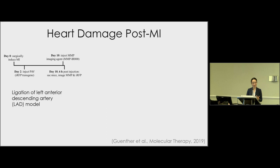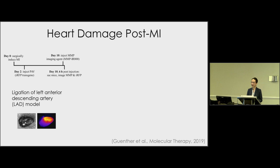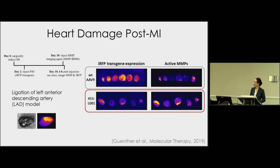For one model we're targeting heart failure after a heart attack. We do surgical induction of MI, then two days later a single intravenous injection of pro-vectors, and several days later we assess where expression is happening. A collaborator provides an imaging agent that lights up active MMP regions of the damaged heart. The unmodified AAV9 capsid delivers the IRFP transgene throughout the entire heart, not caring where active MMP areas are. But our pro-vectors deliver the IRFP transgene specifically where there is elevated MMP. This was recently published in Molecular Therapy this year.